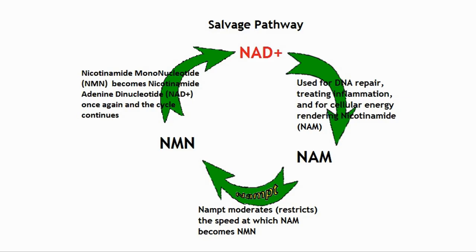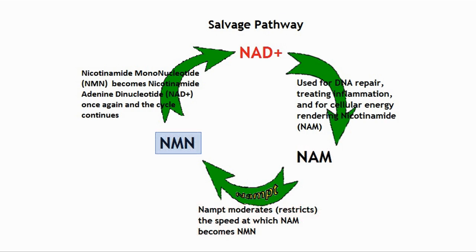As another note, most NAD is made by the salvage pathway. NAM is here in the cycle — it needs to be converted by NAMPT to NMN. However, NAMPT is the rate-limiting step in the cycle and restricts the speed at which NMN is made. NMN comes in after this step and so is more easily converted to NAD.